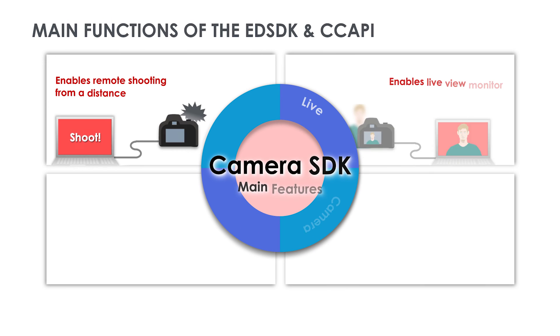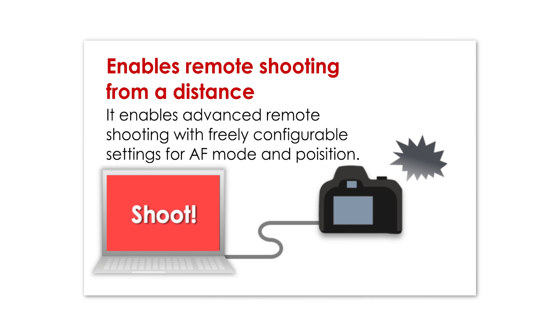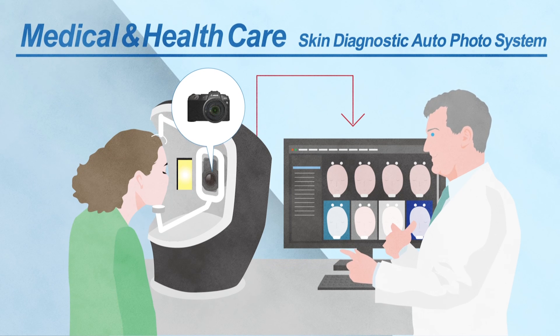Let's look at the EDSDK and CCAPI key functions in more detail. First, remote shooting capability: this enables you to detect, connect, and trigger the camera from a distance. It's ideal for use cases where the camera or subject are hard to reach, like inside medical imaging equipment, traffic cameras, or challenging locations. This feature gives you full control to automatically trigger the camera when you need to, or when a set of parameters are triggered.